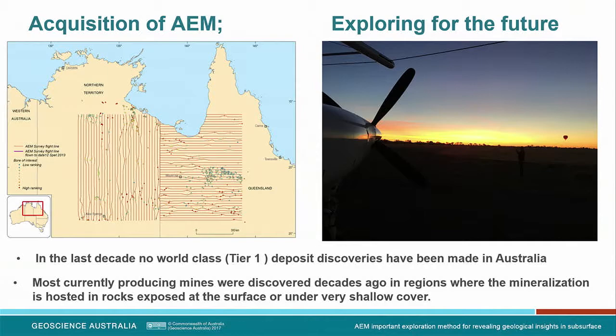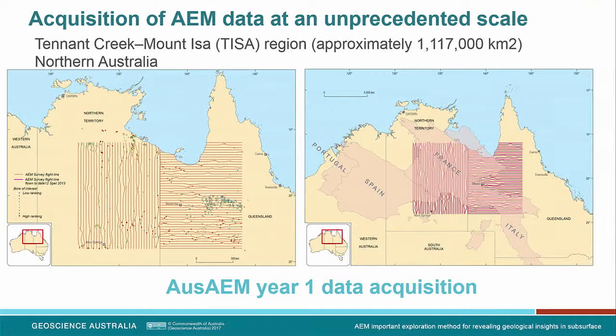Exploring for the future and acquisition of AEM. In Australia, at least in the last decade, no real first-class Tier 1 deposits have been made. Most of our currently producing mines were discovered a few years ago, mostly in regions where the mineralization was quite shallow or the host rocks were under very shallow cover. I'm showing a map from the northern part of Australia — what we call the Tiza region, from Tennant Creek to Mount Tiza — which is a program going to run for at least four years.